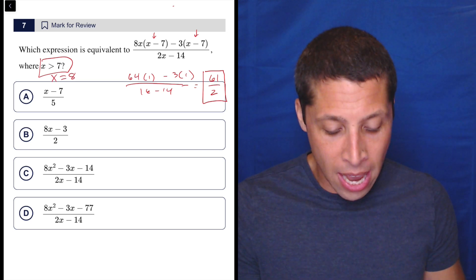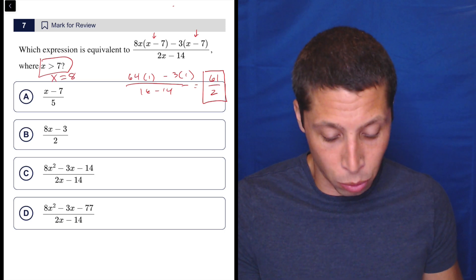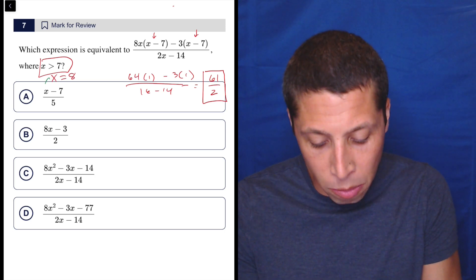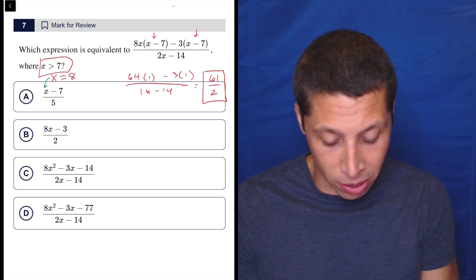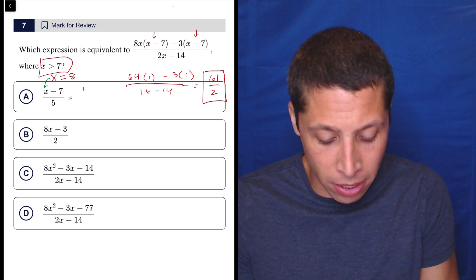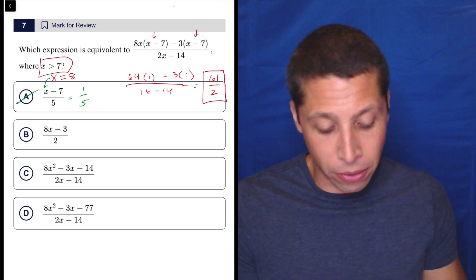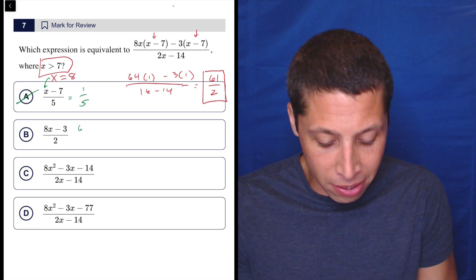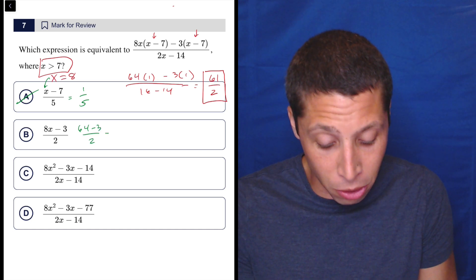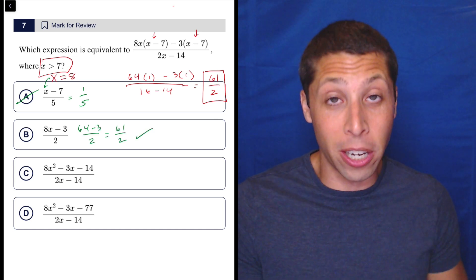It's what it is. I can also see very quickly that some of these answer choices are not going to work. So let's switch colors so we don't lose track. Once we make X eight, it's going to be eight in all the choices. So this is going to be eight minus seven. That's one fifth. No, definitely not 61 halves. This is going to be 64 minus three over two. So that's 61 over two. That looks good.